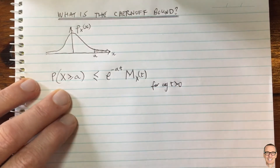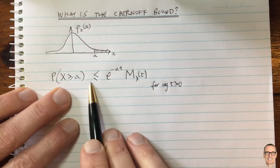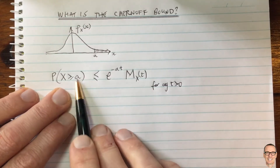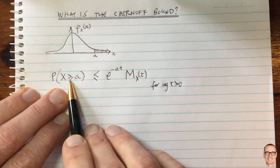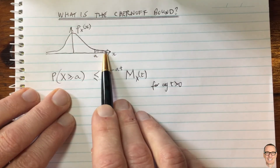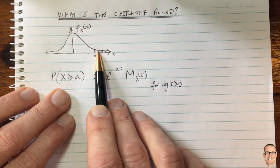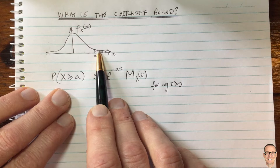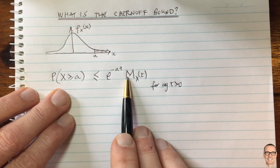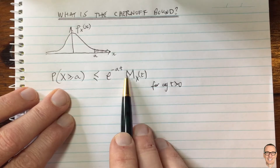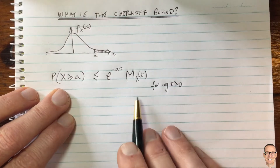Let's understand what this means with an example. It's useful because instead of having to actually calculate that area — which is often difficult; in the case of a Gaussian we can never calculate it exactly, we use lookup tables or computer approximations — here we have a bound on it, so if we can calculate this bound exactly we get an exact value for the largest it could possibly be.